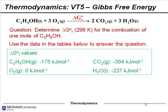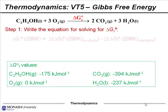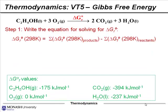Let's solve a couple of problems. Here's a simple one: liquid ethanol burning and combusting to give carbon dioxide and water. The question asks: determine ΔG° for the reaction at 298 Kelvin for the combustion of one mole of ethanol, using the data in the tables. Step one: write out the equation for solving ΔG° for the reaction. The generic equation takes the Gibbs free energy of formation of all products and from that subtracts the Gibbs free energy of formation of all reactants.